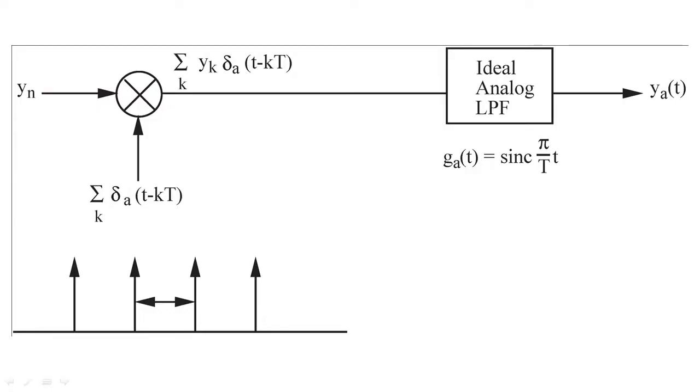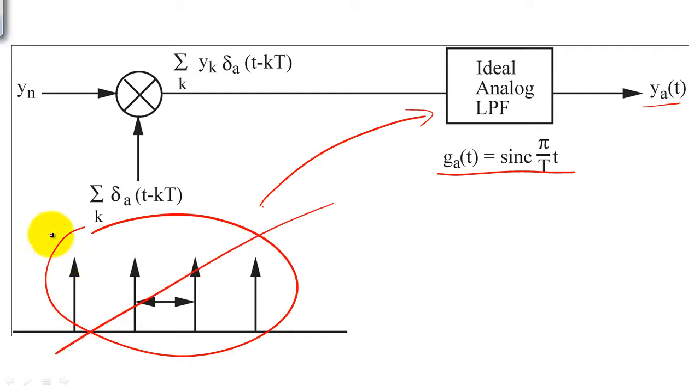In a previous lecture, we showed that the ideal D2A used an ideal low-pass filter to convert a series of impulse functions with heights, termed by y of n, to create y of a. This system is impossible to realize, because we cannot create the perfect impulse train needed to implement the system.